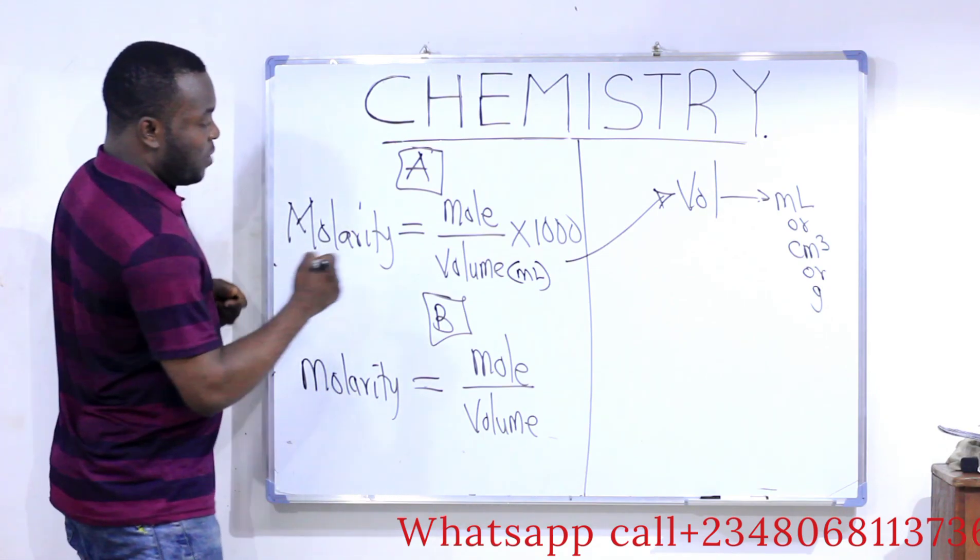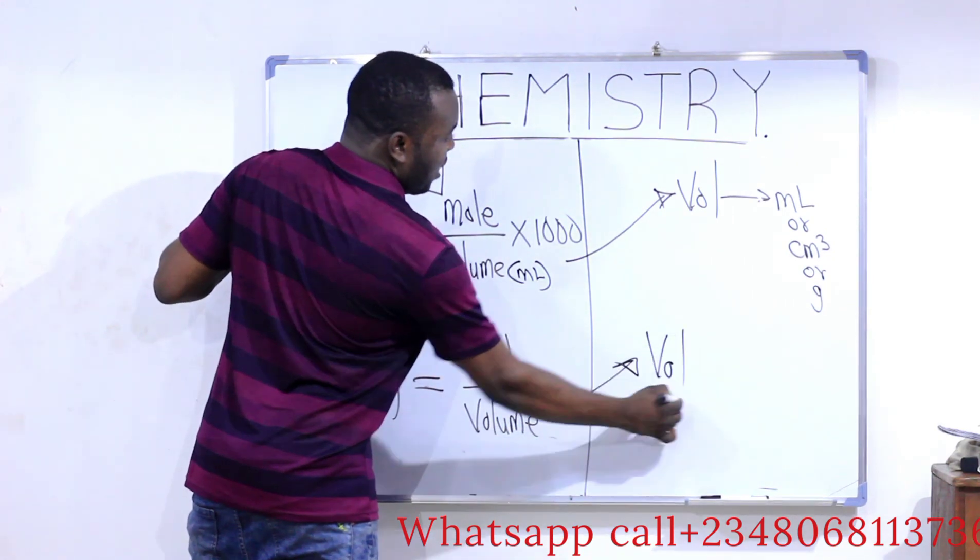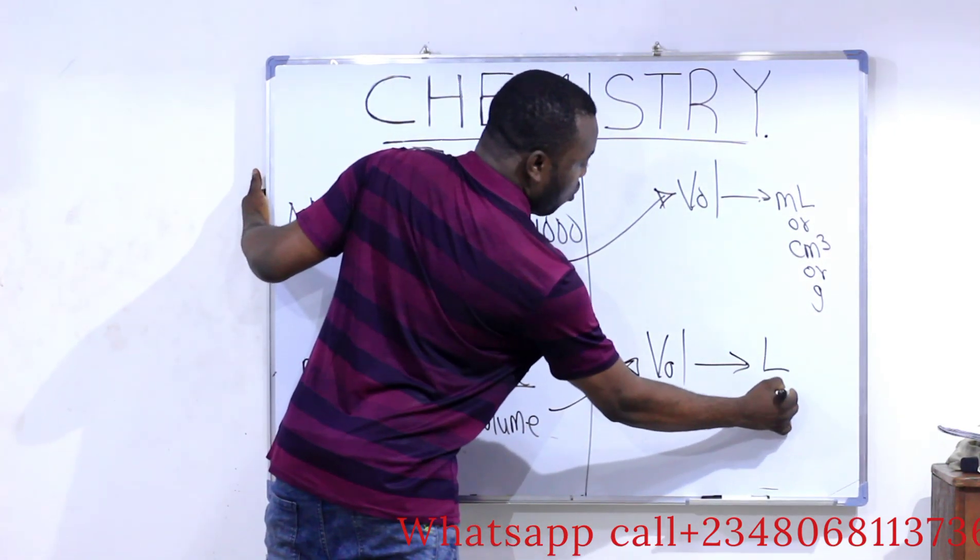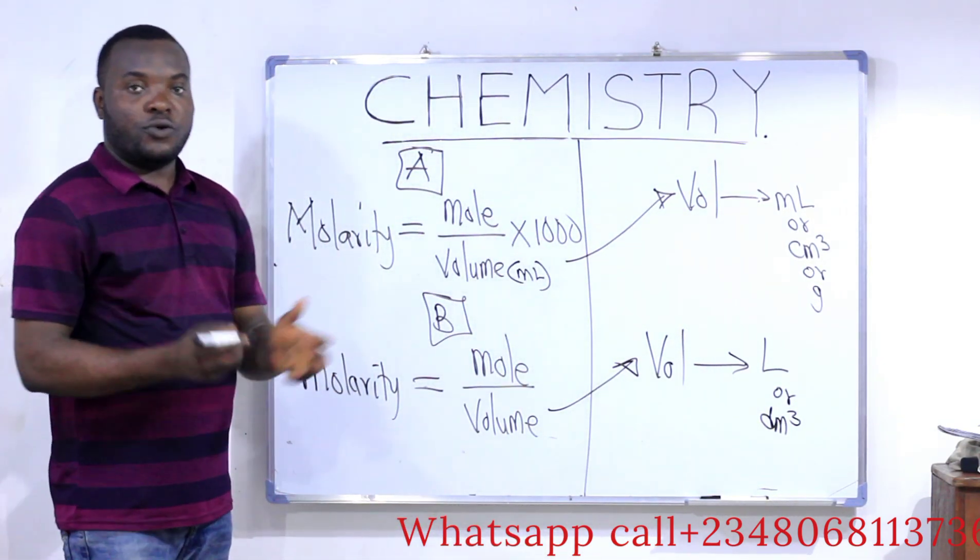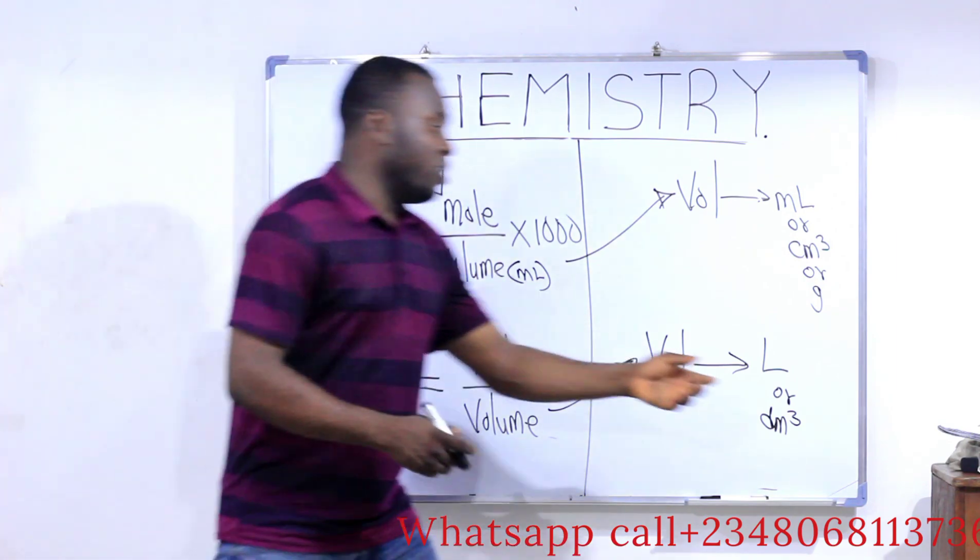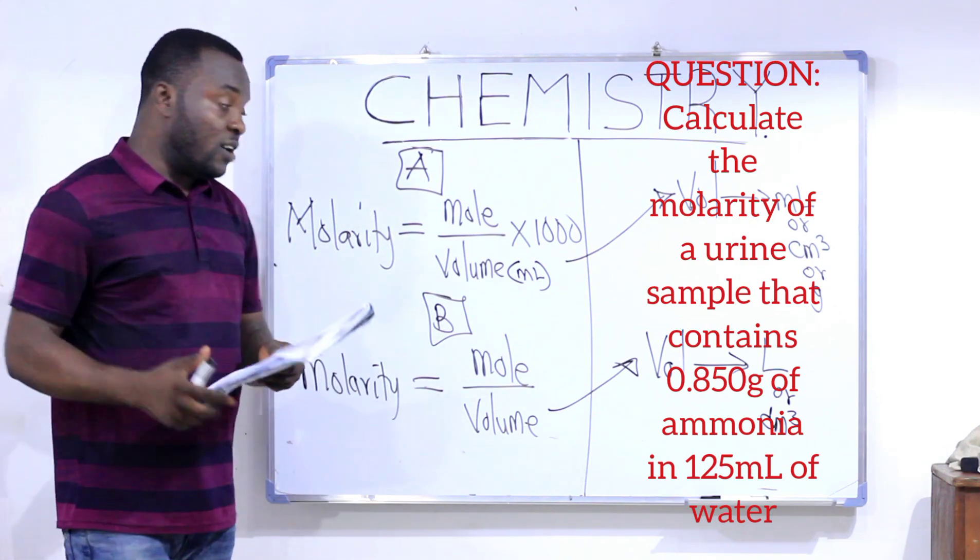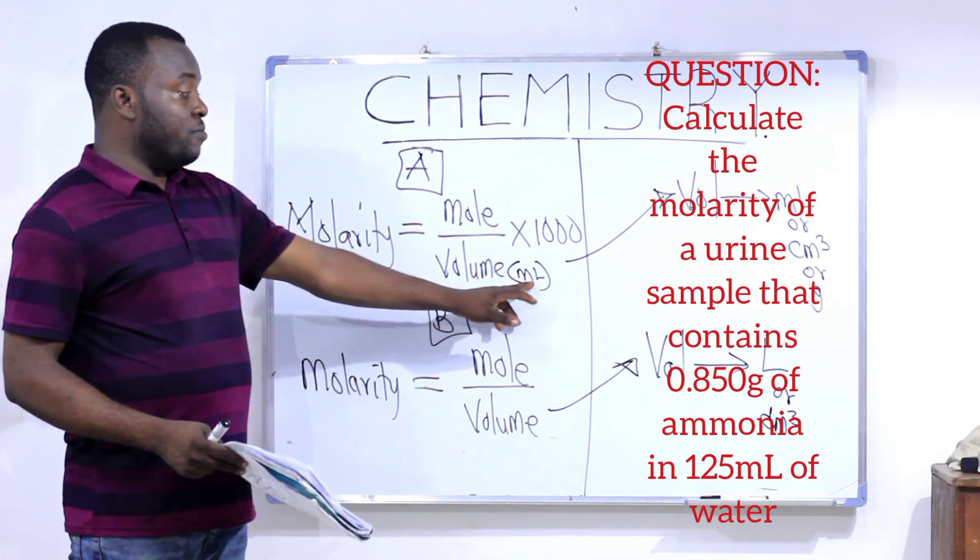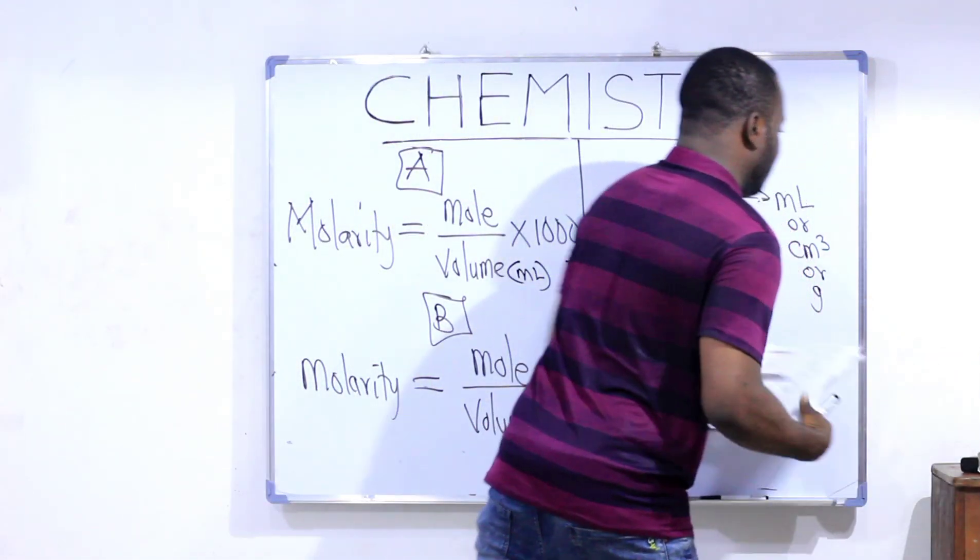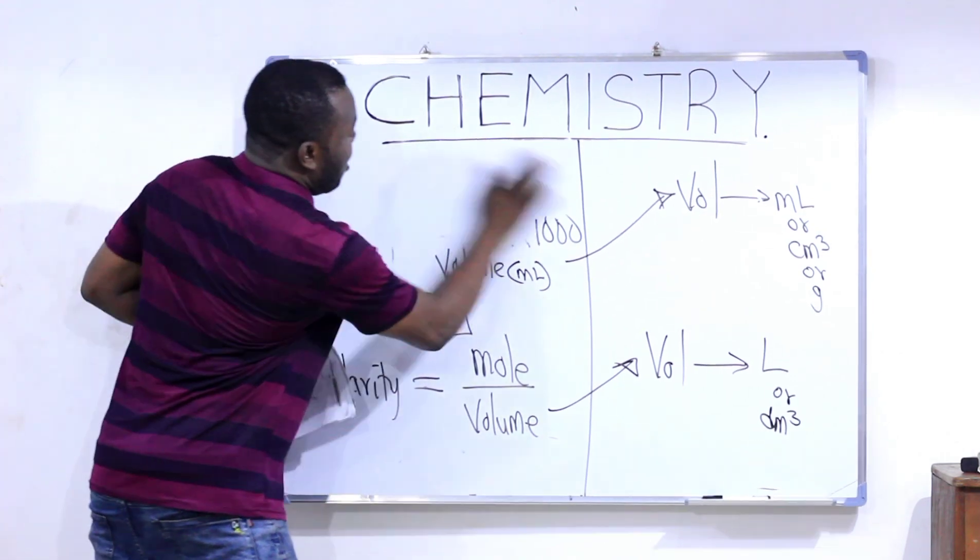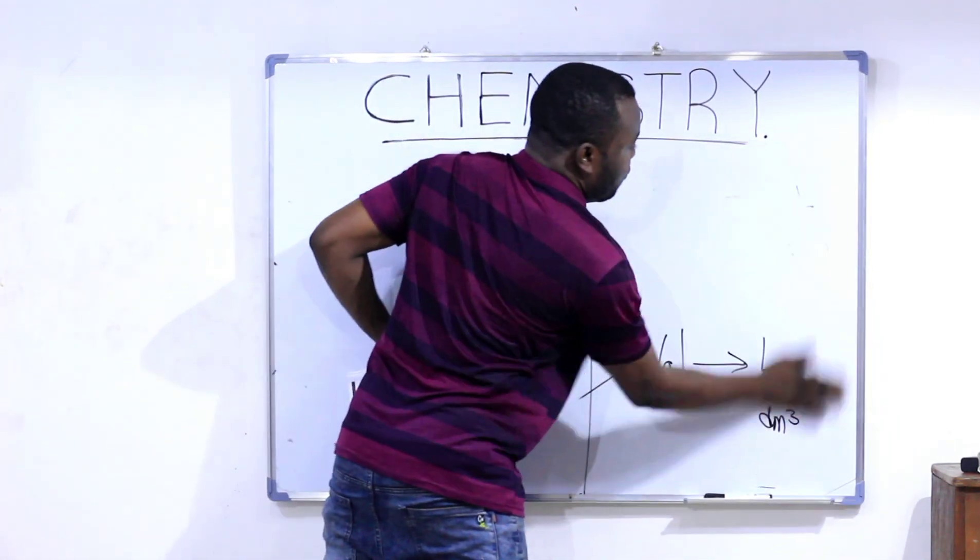Now we use Formula B when the volume has a unit of liter or dm³. Whichever one. So from the question given to us, you can see that the unit of the volume, they give us 125 milliliter. The unit of the volume is a milliliter. That means you are going to use Formula A, the one that has 1,000. And that simply means that our answer is going to be easy enough to get.